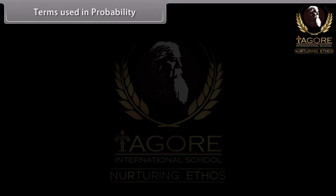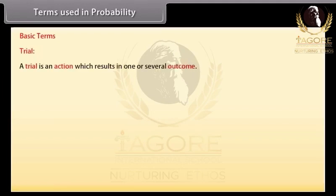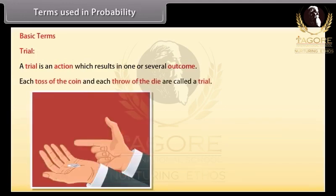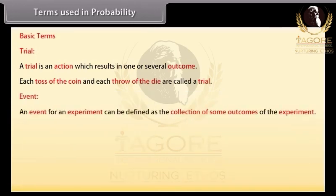Terms used in probability. Before going further, let's learn about basic terms used in probability. Trial: A trial is an action which results in one or several outcomes. For example, each toss of the coin and each throw of the dice are called a trial. Event: An event for an experiment can be defined as the collection of some outcomes of the experiment.